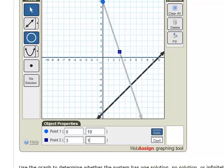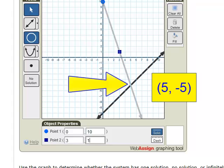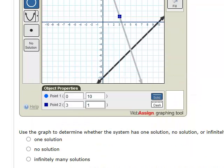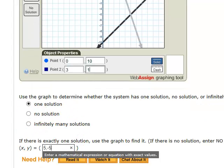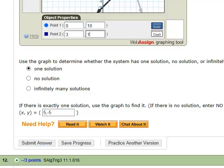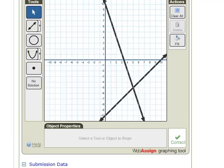So it looks like these two lines, I do have just one solution. It looks like it would be at 5, negative 5. So I do have one solution, 5, negative 5. I will submit my answer, and it is correct.